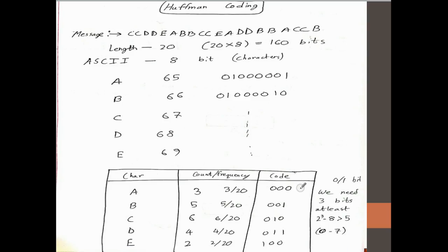One thing over here: I want you to ignore this part for now, just don't look at over here. So we have this string, this message: C, E, C, D, D, E, A, B, and so on up to B.